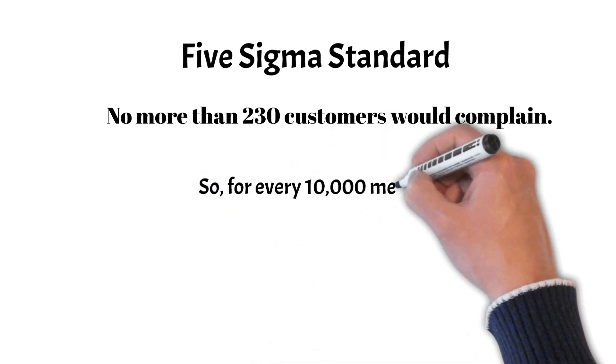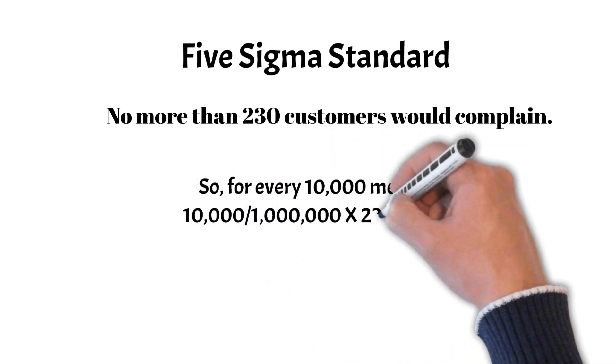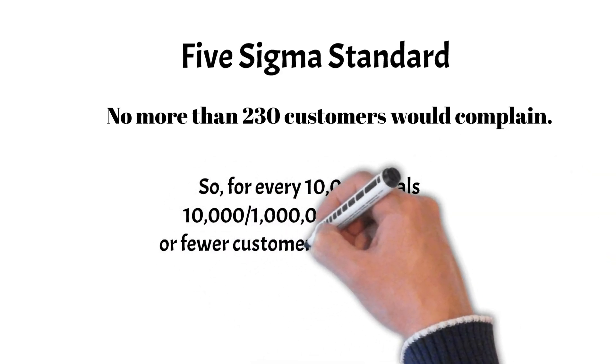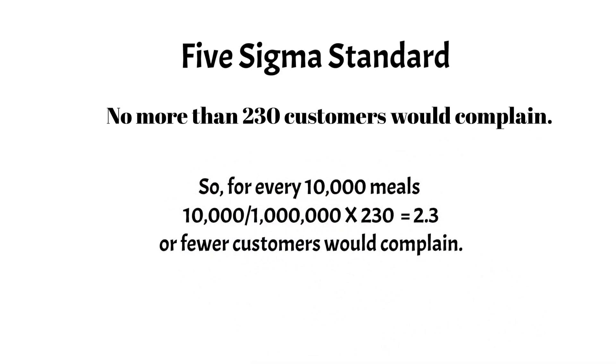So for every 10,000 meals, as an example, this would mean that 10,000 divided by a million times 230 equals 2.3 or fewer customers would complain.